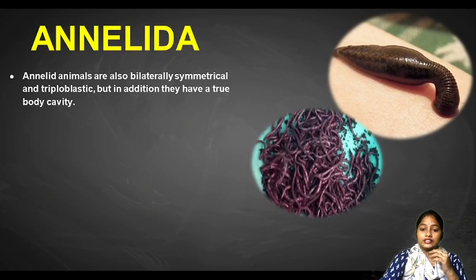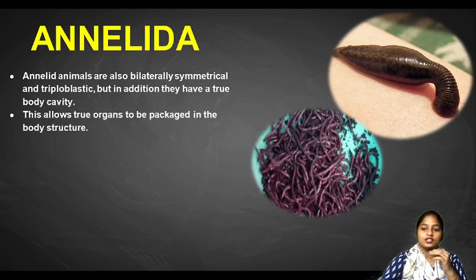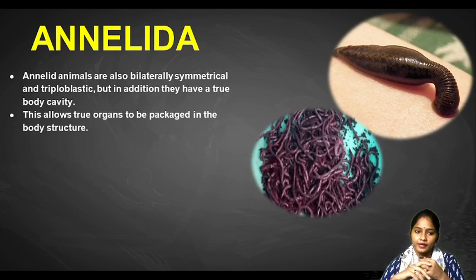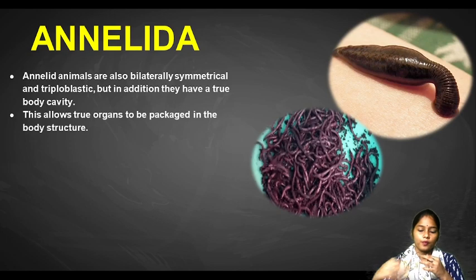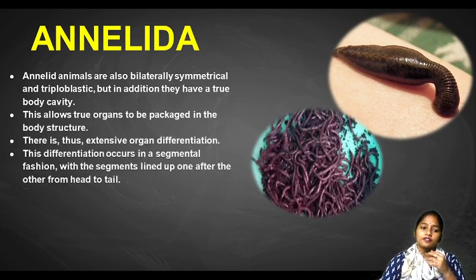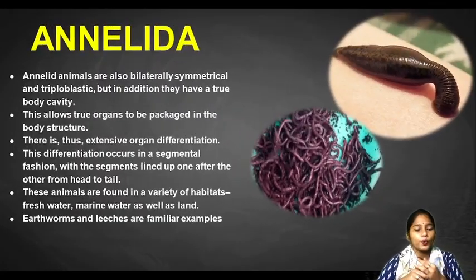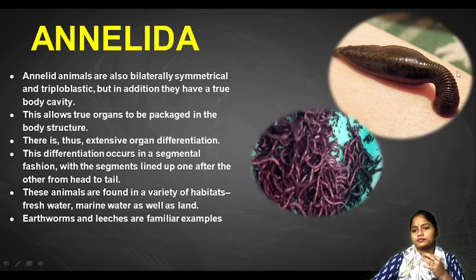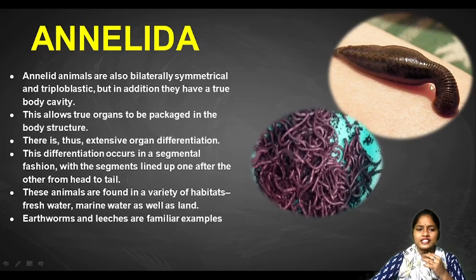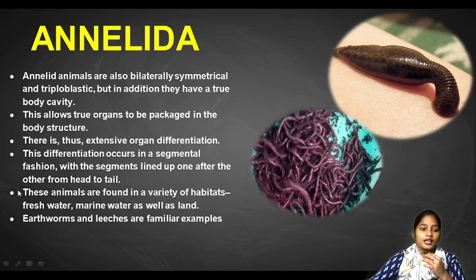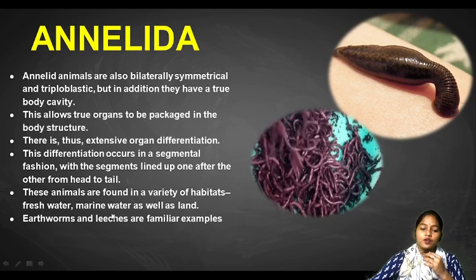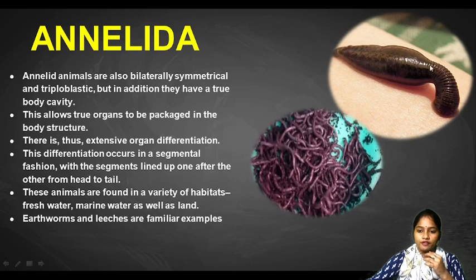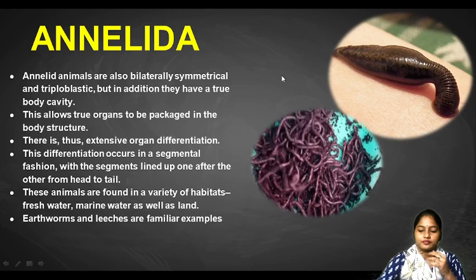Next is Annelida. These animals are also bilaterally symmetrical and triploblastic — three layers of cells. But in addition, they have a true body cavity, meaning they have true organs inside their body structure, and there is extensive organ differentiation. This differentiation occurs in segments — you can see earthworms and leeches have different segments lined up. These animals are found in a variety of habitats: freshwater, marine water, and on land. The leech sucks blood from humans and animals and also has a segmented body.